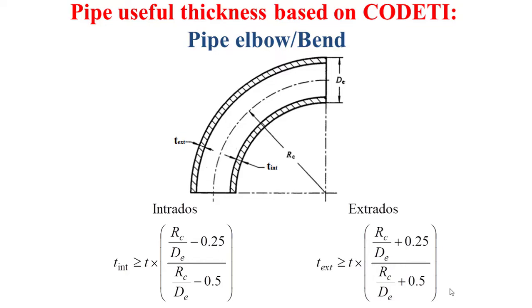Of course, here, as it is depicted in the model, RC is the radius of the curvature of the elbow. DE means the external diameter of the elbow.